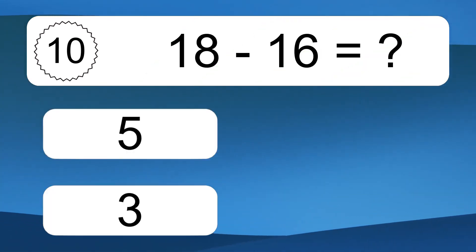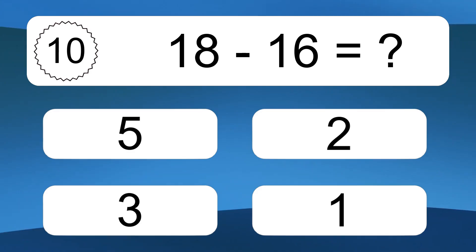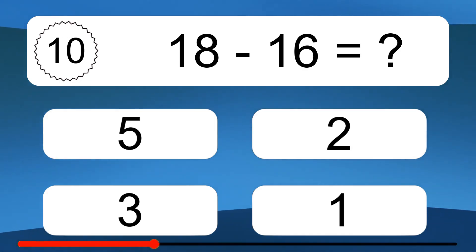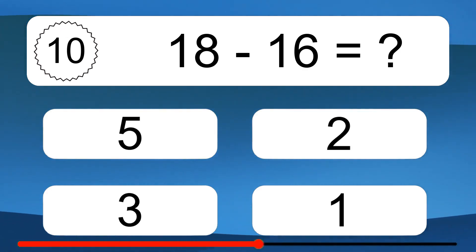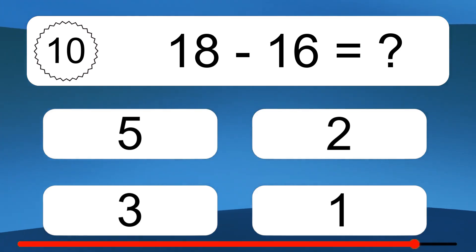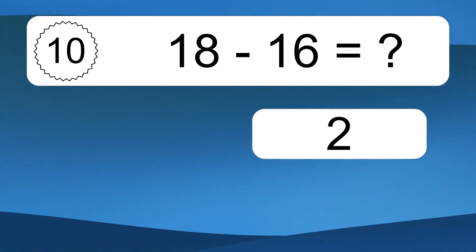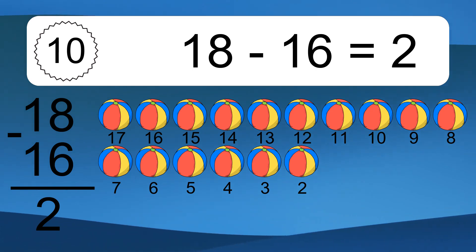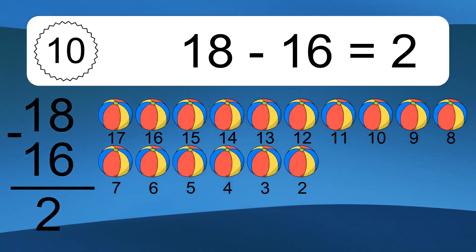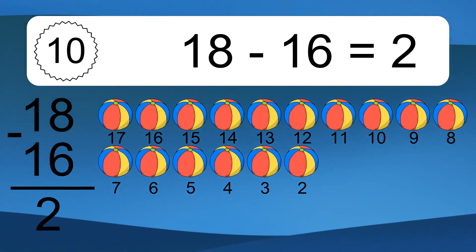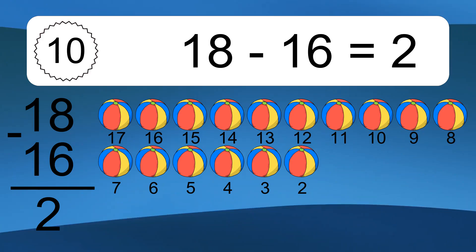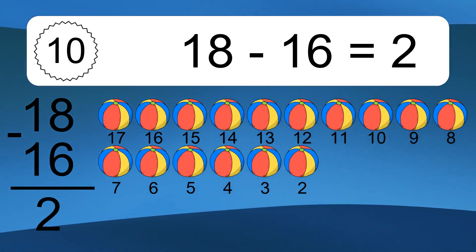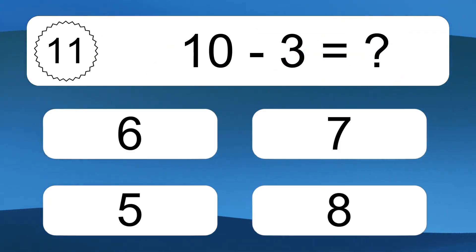18 minus 16 equals what? 18 minus 16 equals 2. Let's count it: 18, 17, 16, 15, 14, 13, 12, 11, 10, 9, 8, 7, 6, 5, 4, 3, 2.